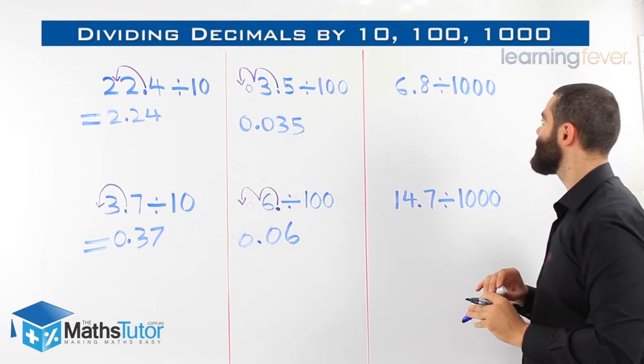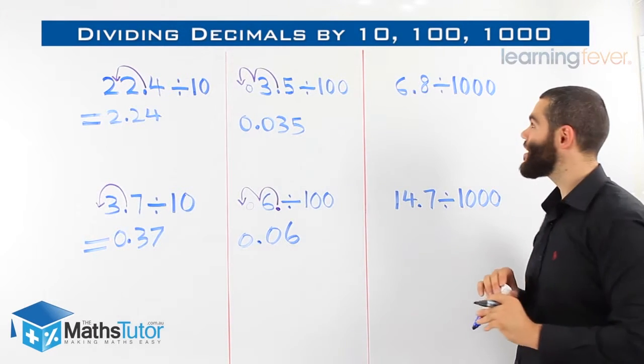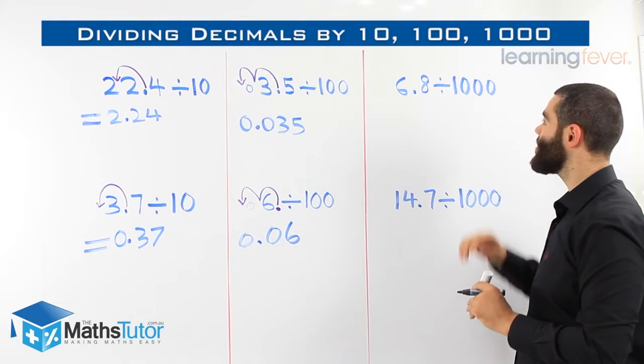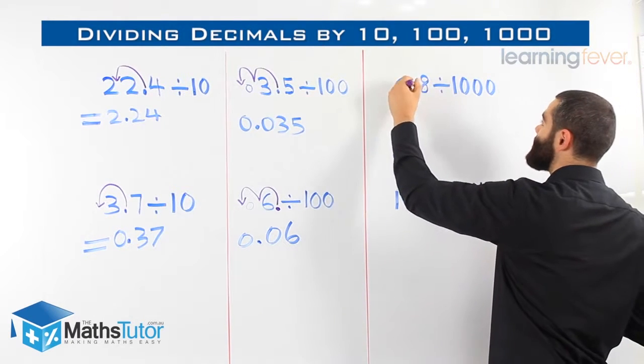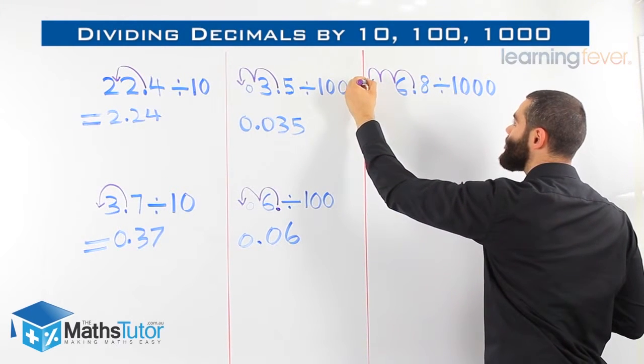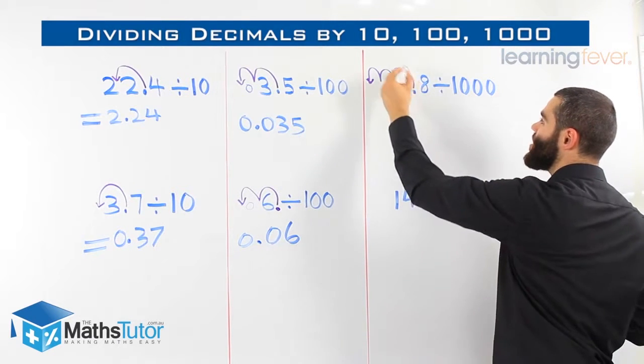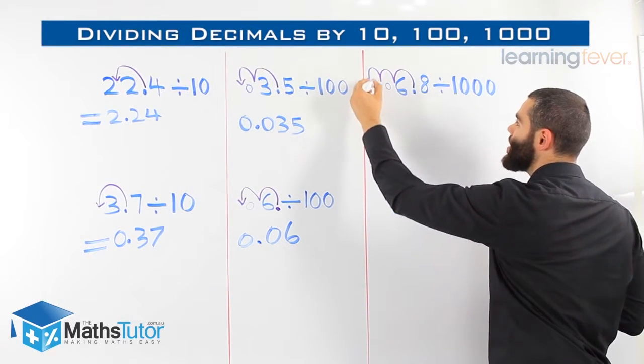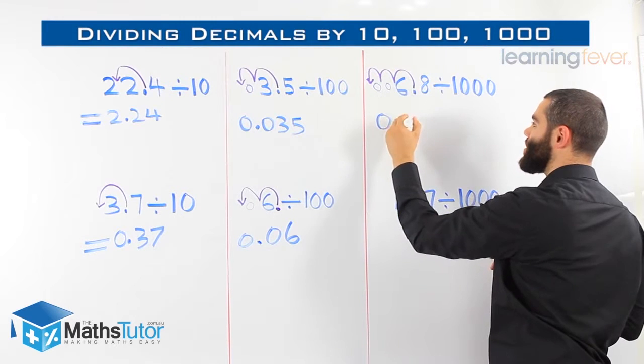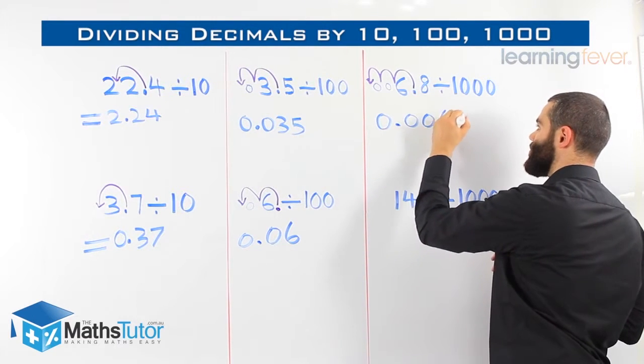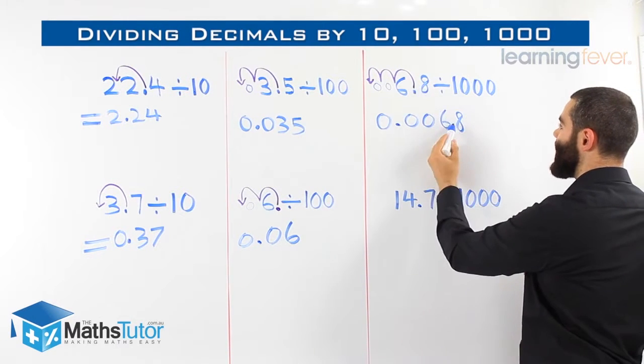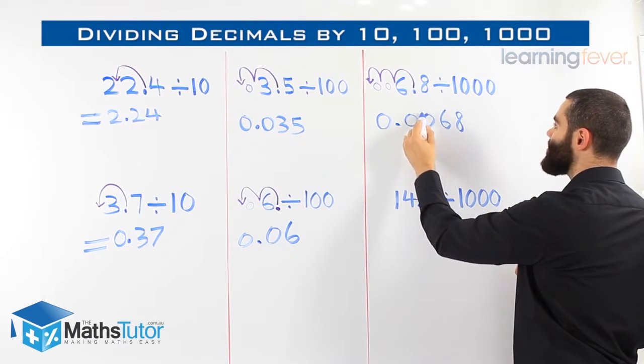6.8 divided by a thousand. We're going to the left, how many times? Three times, because we have one, two, three zeros. Alright, let's do it. 6.8 divided by a thousand, moving once, twice, three times. So we're jumping over the six, we're jumping over nothing, and we're jumping over another nothing. So 0.006. The point was here between the six and the eight, we move three times once, twice, three times, 0.0068.